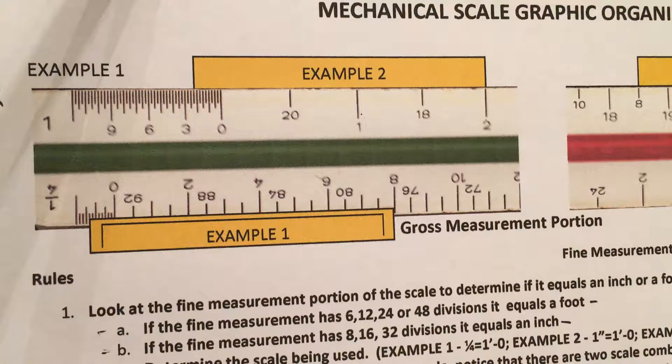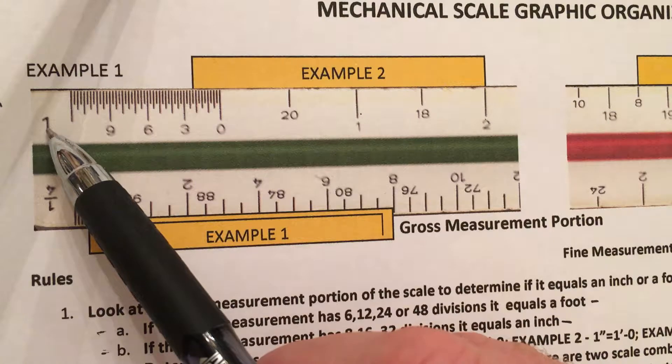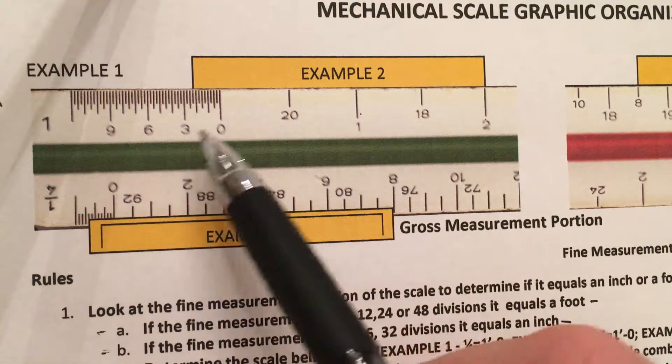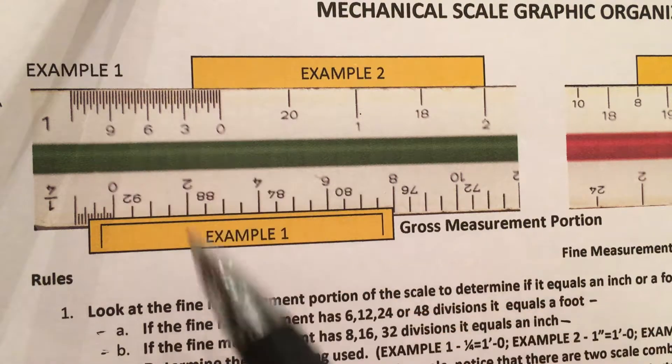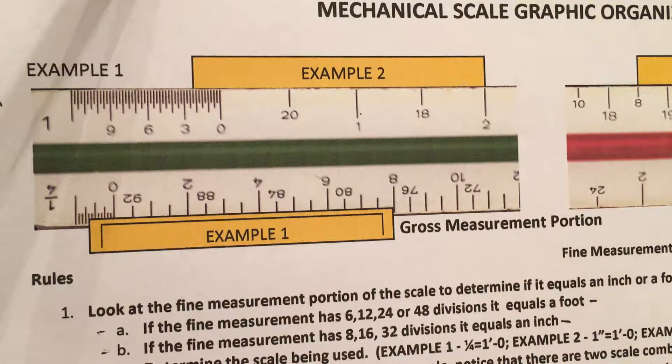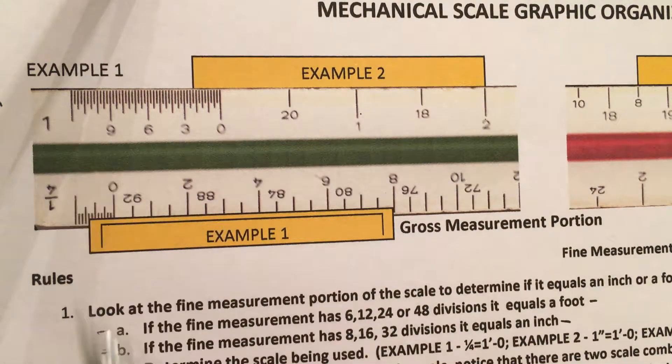With mechanical scales, it's a little bit different. So I'm going to look at this example here and I know that this one represents one foot because I have 48 divisions in my gross measurement scale. The first thing I'm going to do is look at my gross measurement scale and determine if I'm measuring feet or inches. In this case, I'm measuring feet.